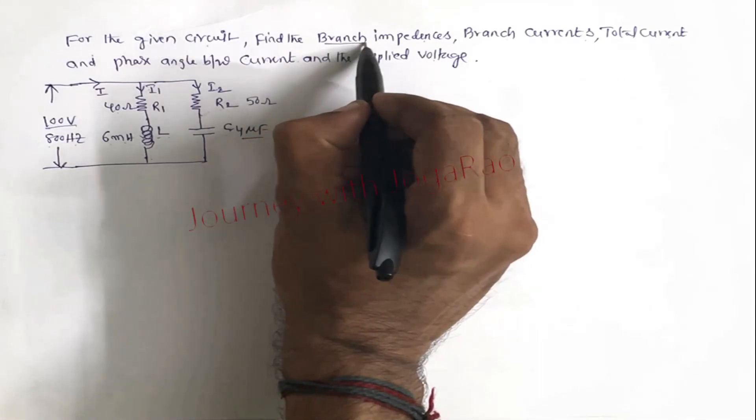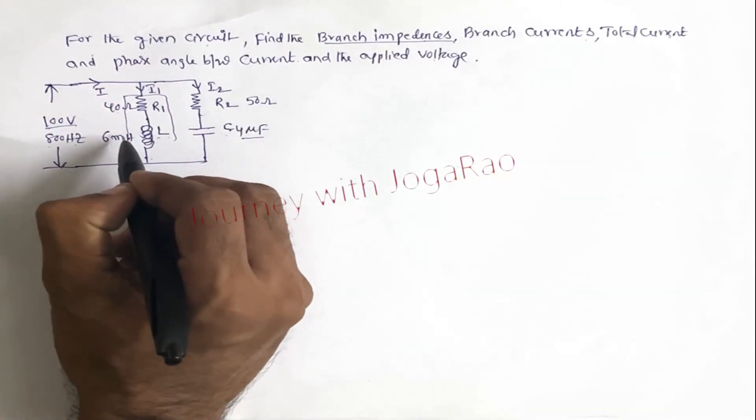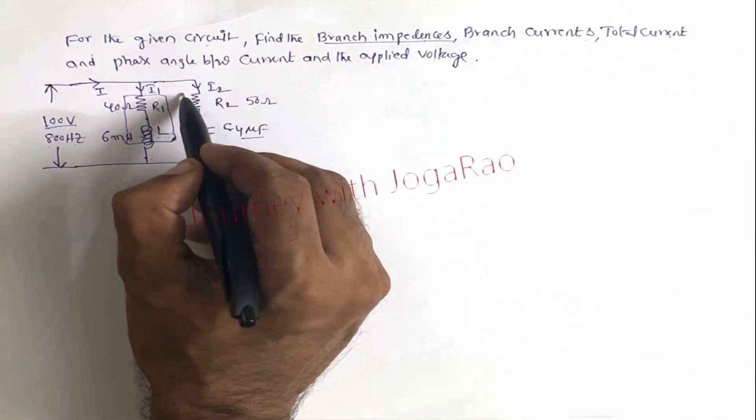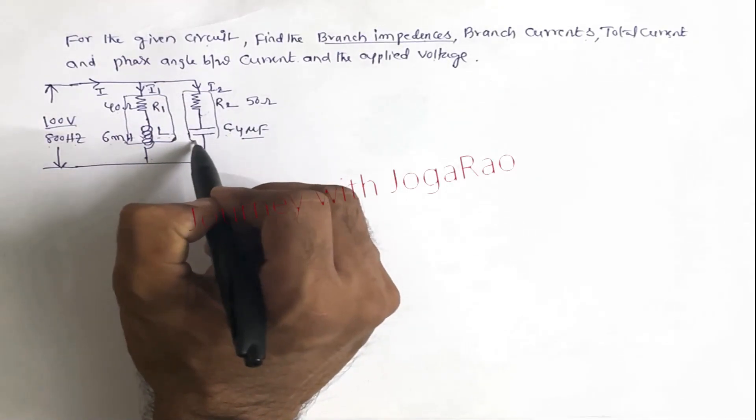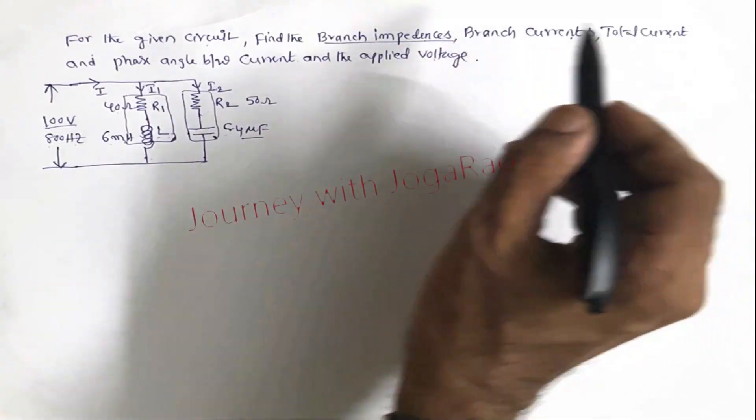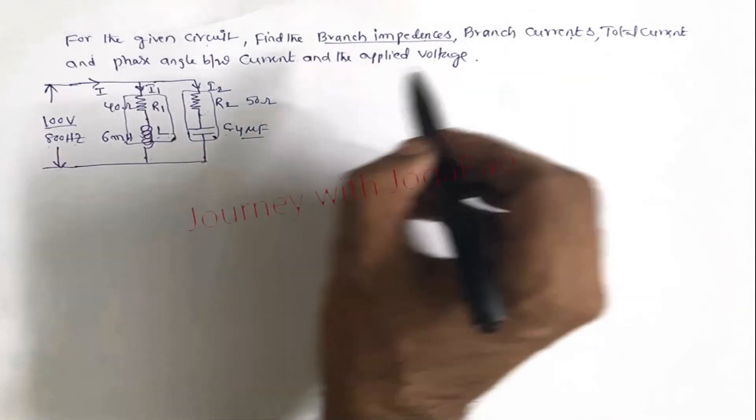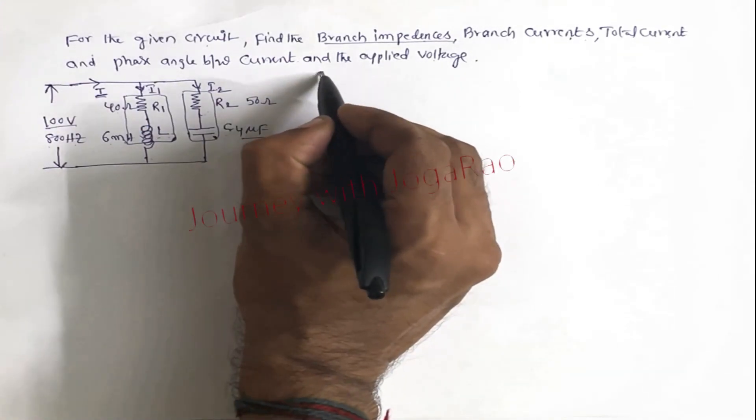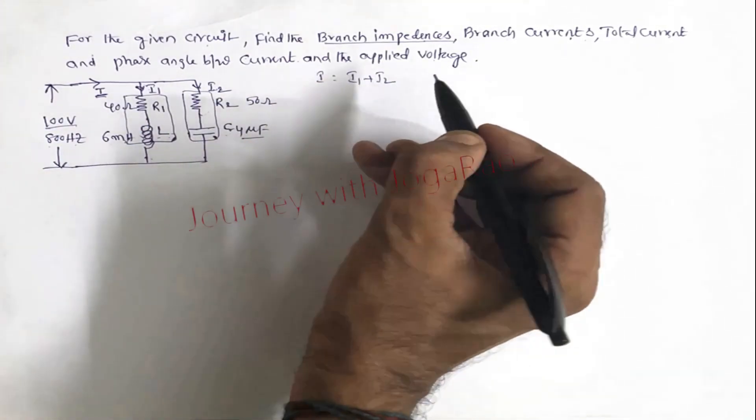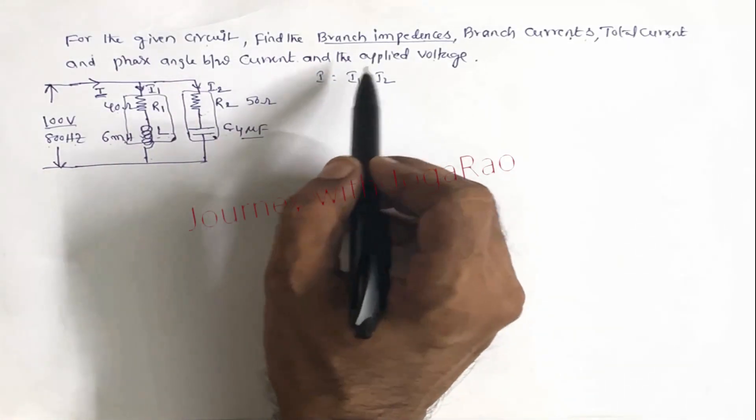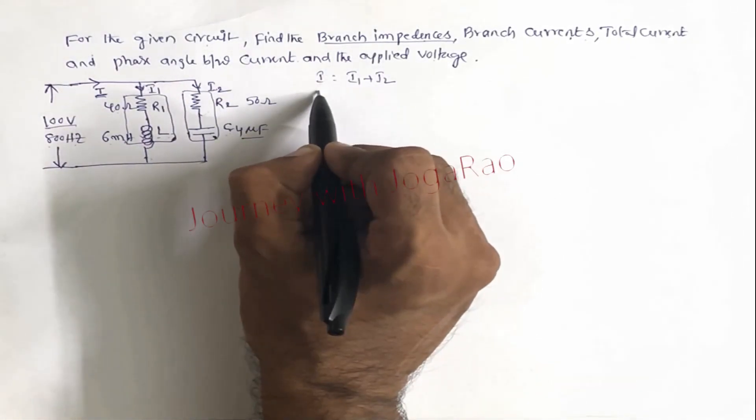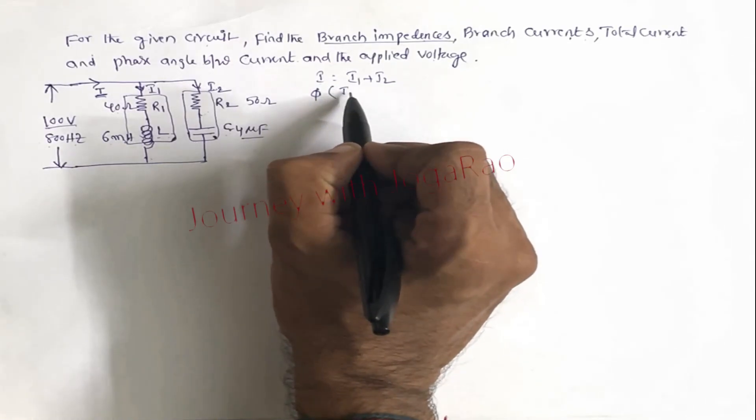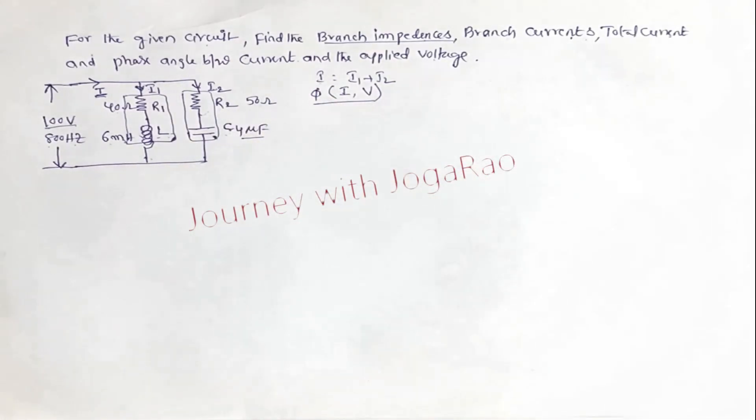So, branch impedances we need to calculate. This branch impedance find out. Similarly, this branch impedance find out. Next, branch currents I1 and I2. And total current I is equal I1 plus I2. And phase angle between total current and applied voltage, phi, between current and voltage find out.